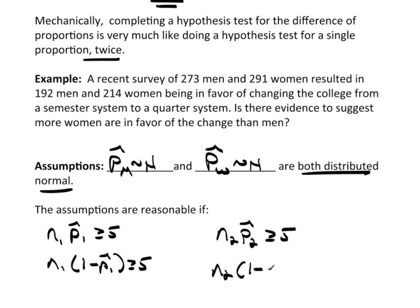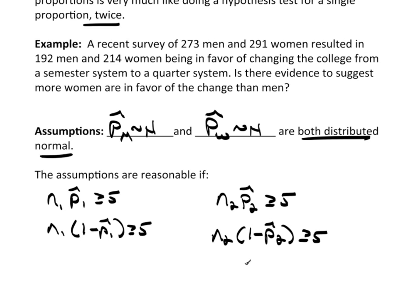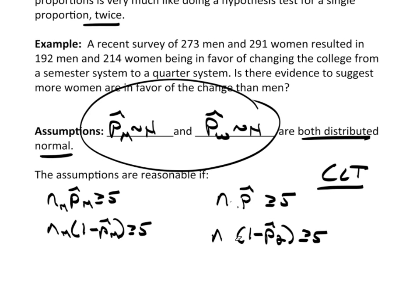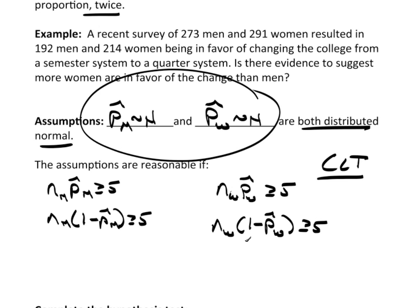If both of these work, or both of these are satisfied, then we can say this is a reasonable assumption. This is applying the CLT to the proportions twice. Now here I don't have 1 and 2. I'm going to change this to men and this 2 is going to go away, and I'm going to make this women. So again, you can't just say this. You need to actually check it.